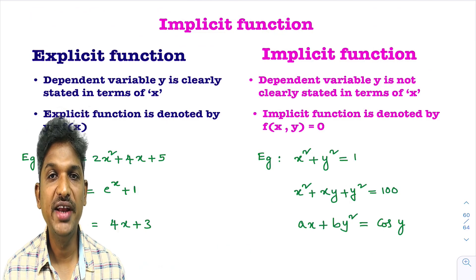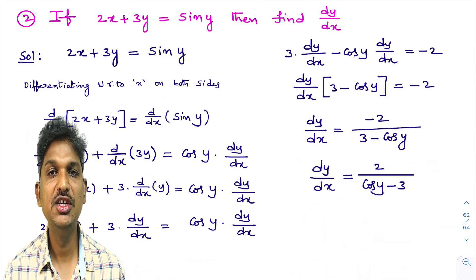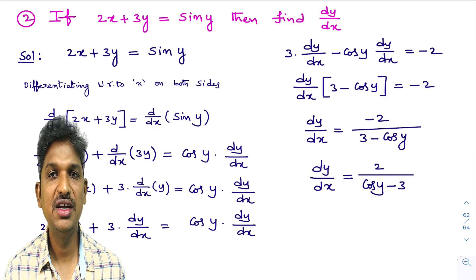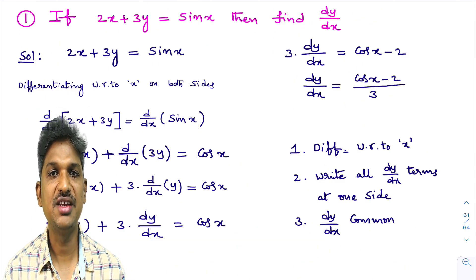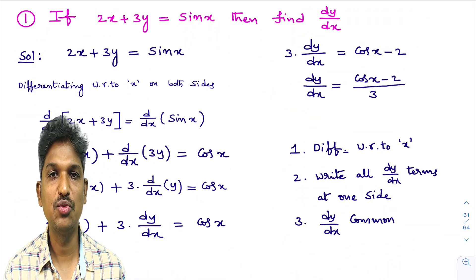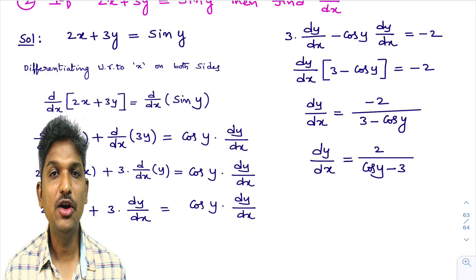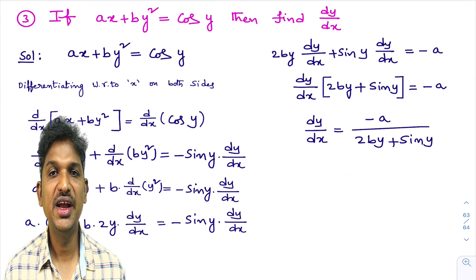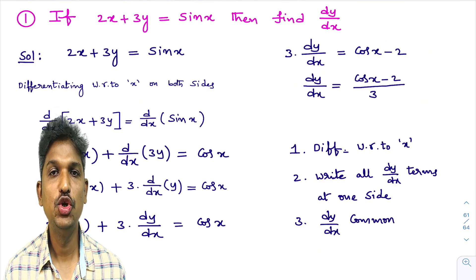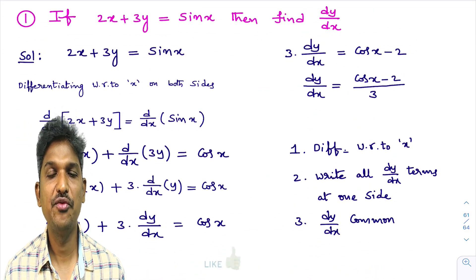Once you have identified that the given function is an implicit function, first, you need to differentiate with respect to x on both sides. Once differentiation is over, second step, we will write all dy/dx terms at one side, remaining all to the other side. Third step, after writing all dy/dx terms at one side, we will take dy/dx common. Then you can easily get dy/dx from the given implicit function.